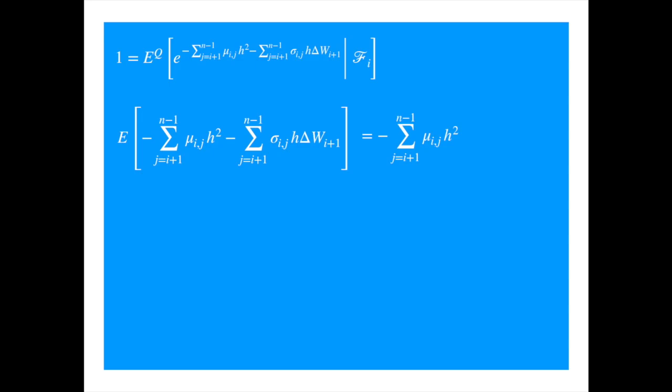By the way we are assuming that the randomness is coming from just one Brownian, so at each time step i, the same Brownian motion applies to all maturities. So W doesn't depend on the summation index, and you can take it outside the summation.